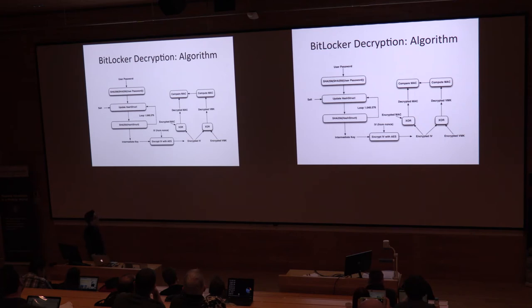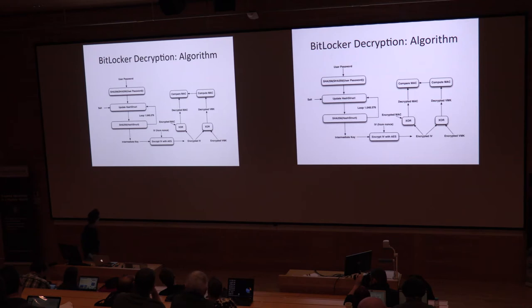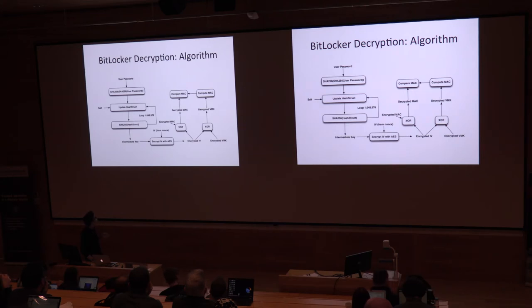This is the algorithm used by BitLocker to decrypt your memory device. The user types the password. Then BitLocker applies the SHA function twice. Then it starts the main loop of more than one million iterations. During each iteration, BitLocker hashes a particular structure. After this main loop, it produces an intermediate key. With this key, BitLocker encrypts the IV obtained from the nonce using AES. With the encrypted IV, BitLocker decrypts the MAC and the Volume Master Key. Finally, to verify that the input password was correct, BitLocker computes the MAC value starting from the decrypted Volume Master Key value and then makes a comparison between the two MAC values. If they are the same, the input password was the right password.